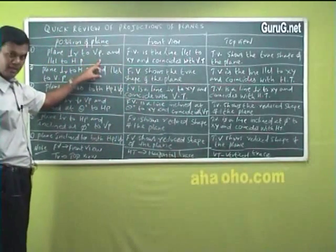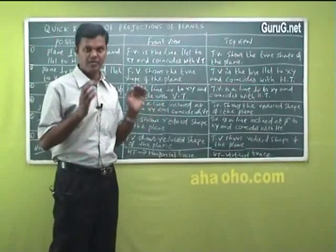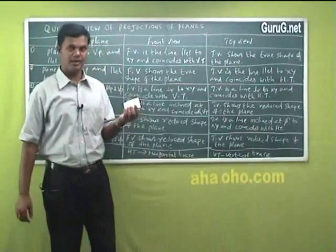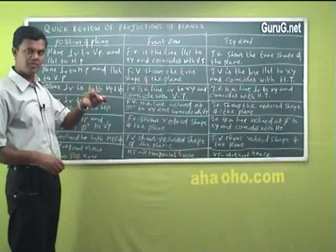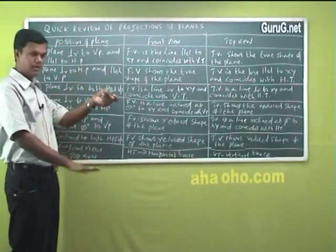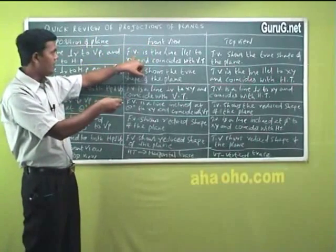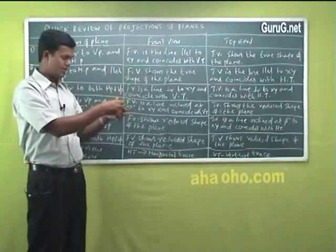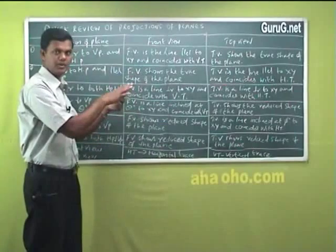Condition one: a plane perpendicular to VP and parallel to HP. If you find any such plane, the front view is a line parallel to XY. You have the XY line here; the front view should be a line only, and this line is parallel to XY.